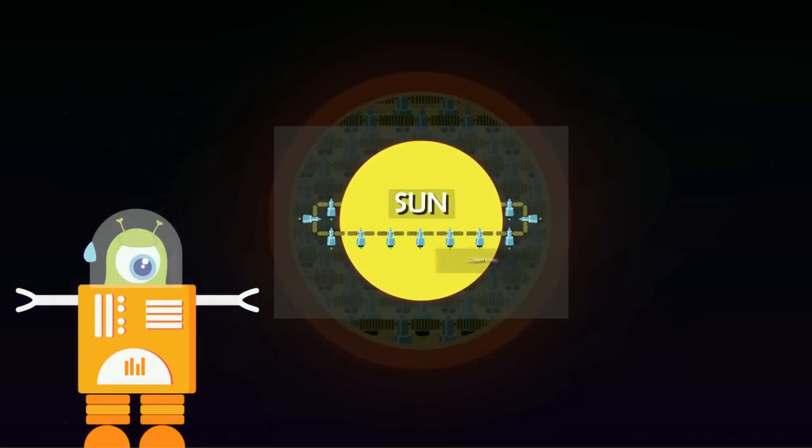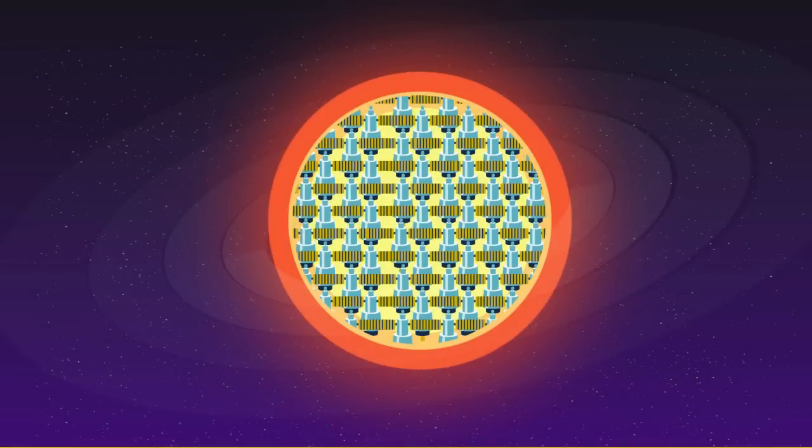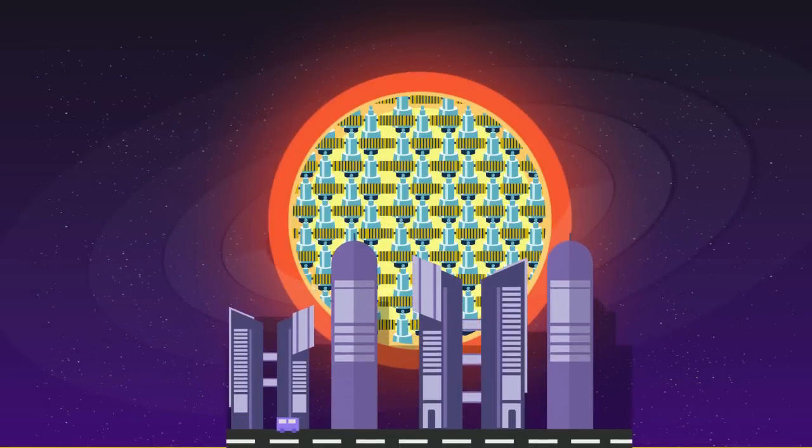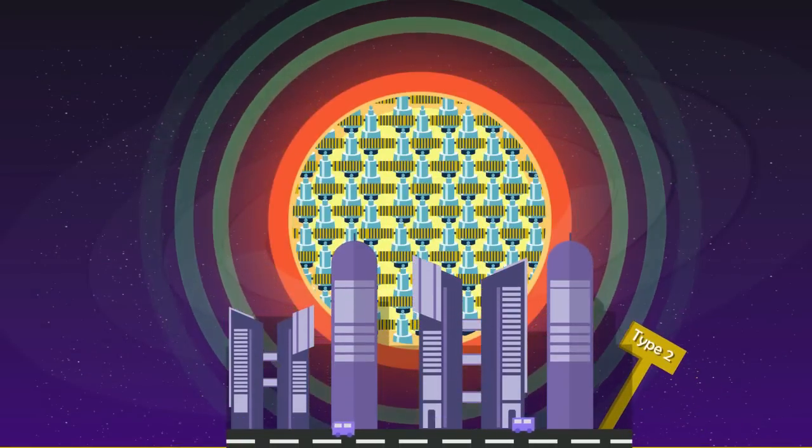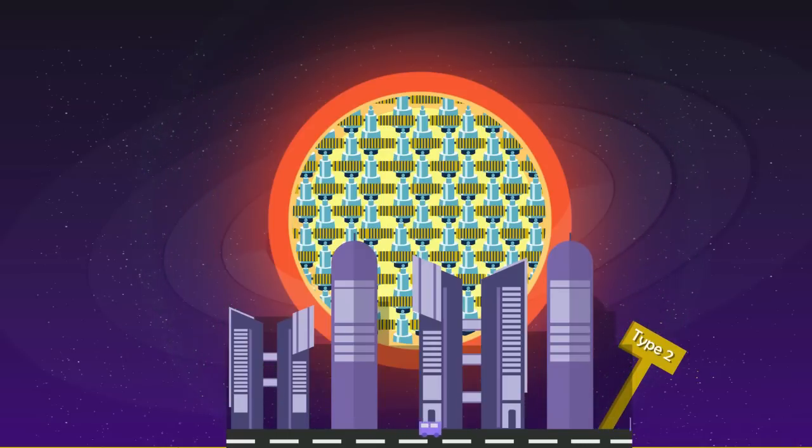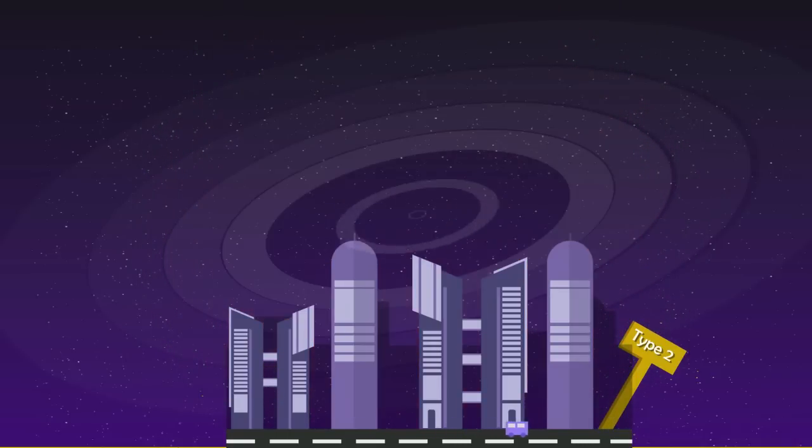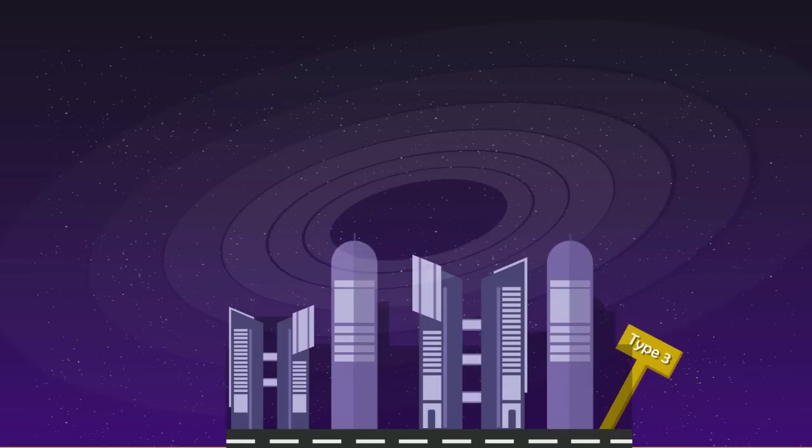So what is the solution? Create Dyson rings or swarms made up of machines that would harness the sun's energy. When humans become capable of building Dyson rings, they will become a Type 2 civilization, which means we are capable of fully utilizing our star's energy. And when we could finally utilize the galaxy's energy, we become a Type 3 civilization.